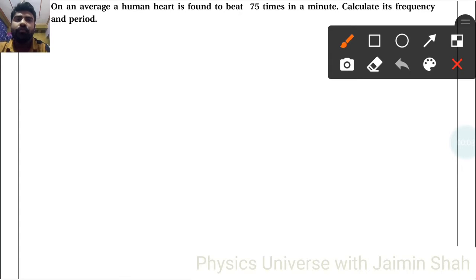The question is: On an average, a human heart is found to beat 75 times in a minute. Calculate its frequency and period. So first of all, 75 times in a minute, converting to seconds, so 76 per second.